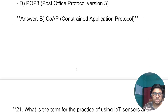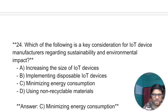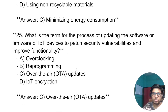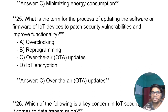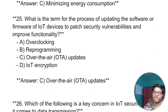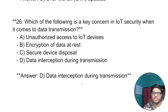So let's start the next 25 questions. What is the term for the process of updating the software or firmware of the IoT device to patch security vulnerabilities and improve functionalities? The answer is: over-the-air update. This is question number 26.